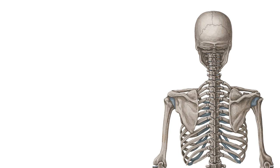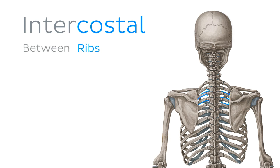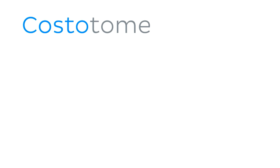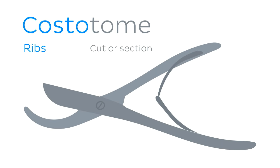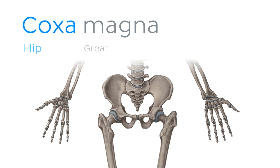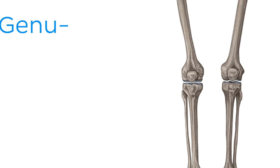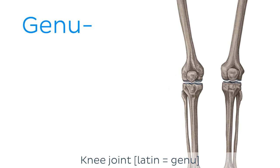The next term is one you're probably aware of. The word element here is costo or costal, meaning of the ribs. For example, intercostal means between the ribs, or costotome, which is a special type of instrument designed for cutting through a rib. Next up is coxo or coxa, which refers to the hip joint. Coxamagna is a condition involving enlargement of the femoral head.